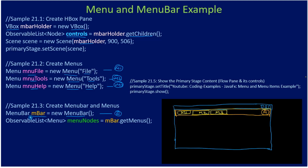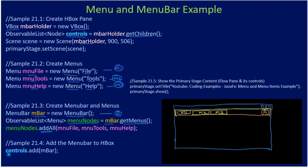We call mbar.getMenus(), which returns an observable list that we name 'menuNodes'. To menuNodes, we call addAll() and pass the three menus: menu File, menu Tools, and menu Help. Finally, we add our menu bar to 'controls' — the children of the VBox — and the VBox was already added to the scene.